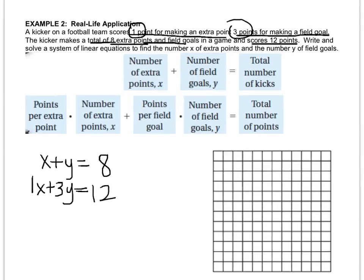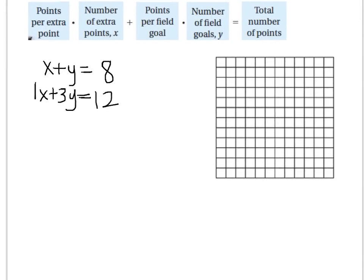So now we just have to get them both in slope-intercept form, and then we can graph them. So if you want to pause the video and get them in slope-intercept form on your own, you can. This equation turns to y equals negative x plus 8 when I rewrite it, and this equation turns to y equals negative one-third x plus 4.